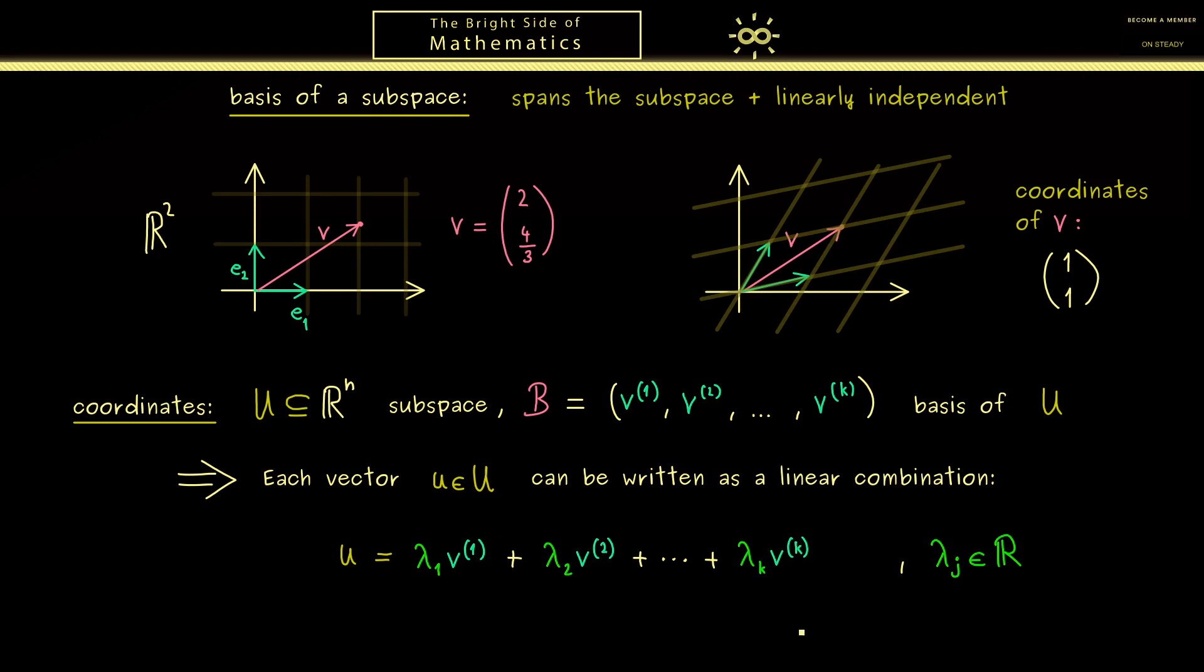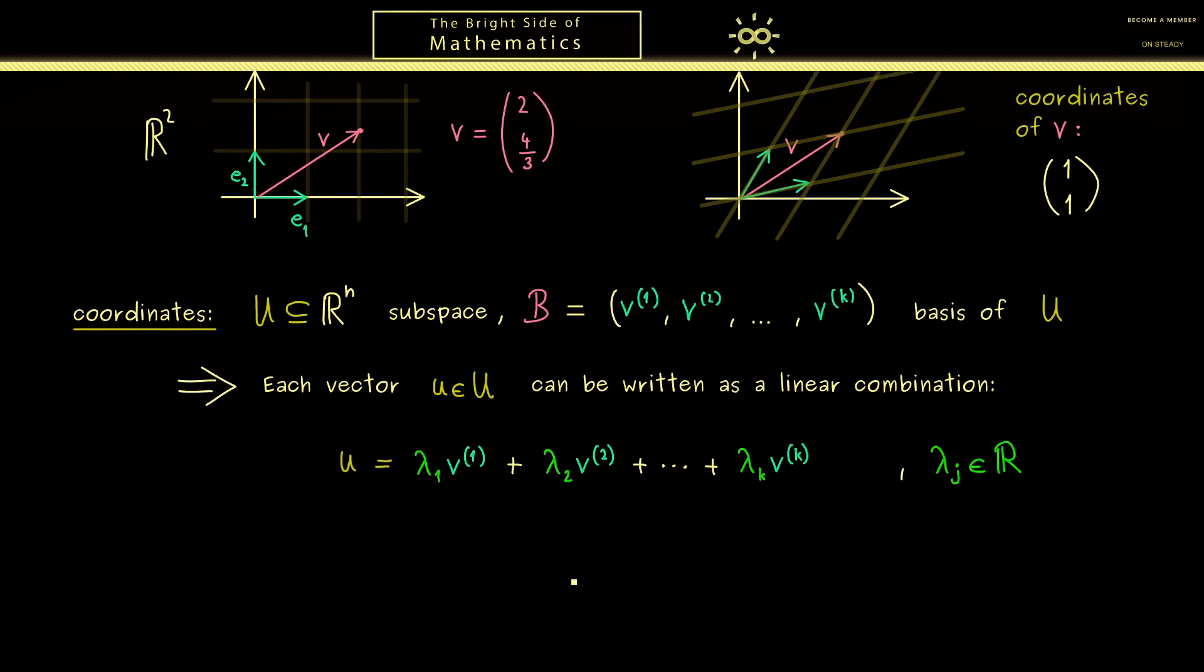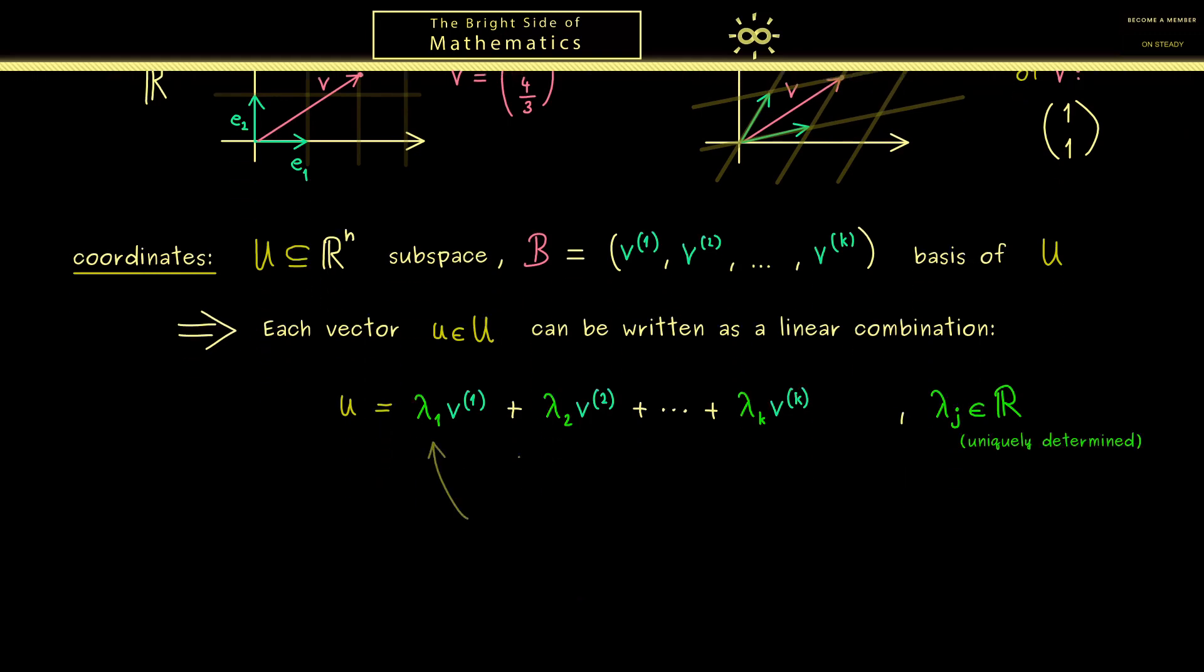And with this we know the coordinates of u are well defined. Moreover please remember here we have exactly k numbers for the coordinates. And these coordinates exist for all vectors u in our subspace U.